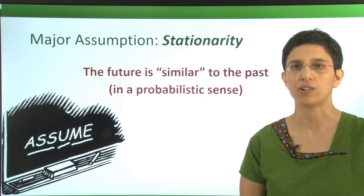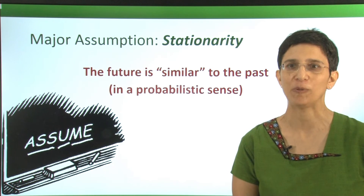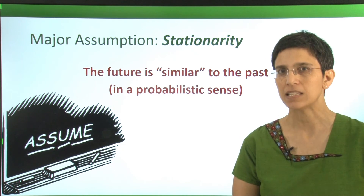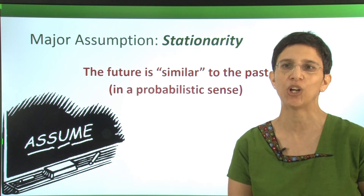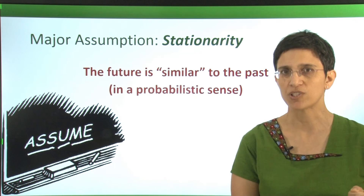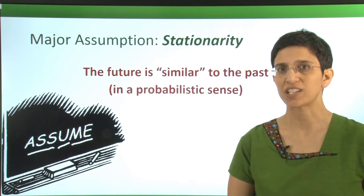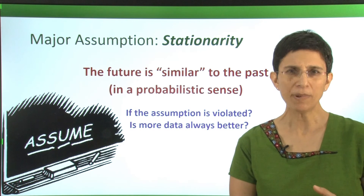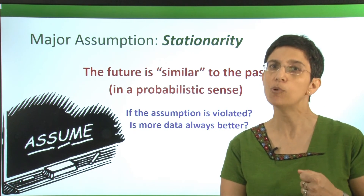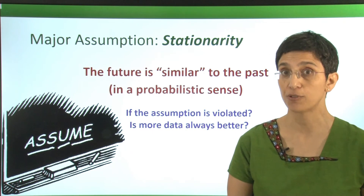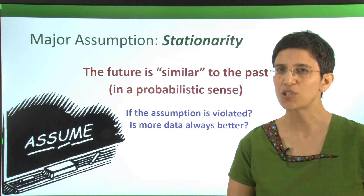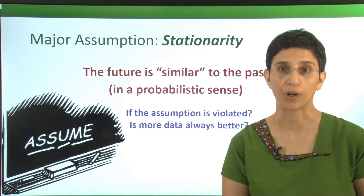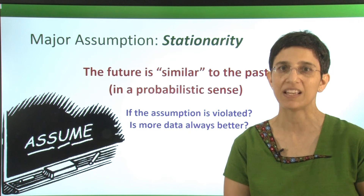When we use a forecasting method, we always want to ask ourselves what the assumption behind the model is. When using a moving average, our assumption is what we call stationarity — we're assuming that the future is very similar to the past we're seeing, not necessarily the same numbers, but in a probabilistic sense. If this assumption is violated, we really don't know how well this forecaster is going to work. So just remember that stationarity is a hidden assumption when we're using a moving average.